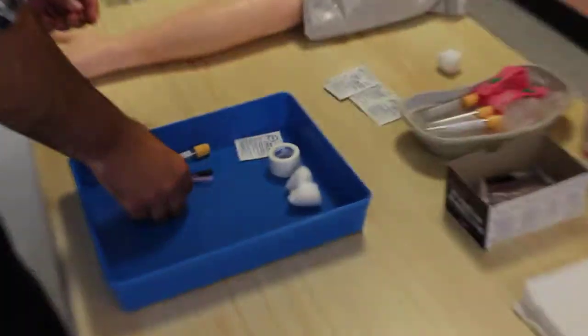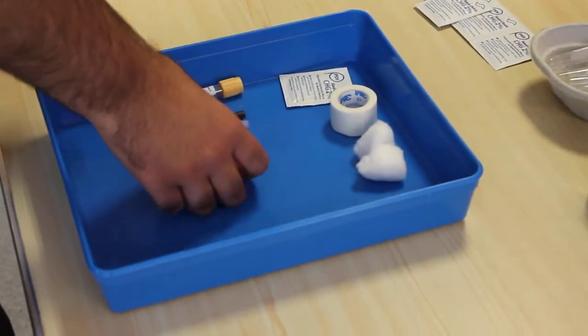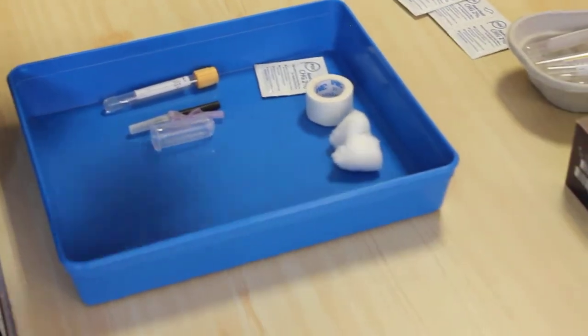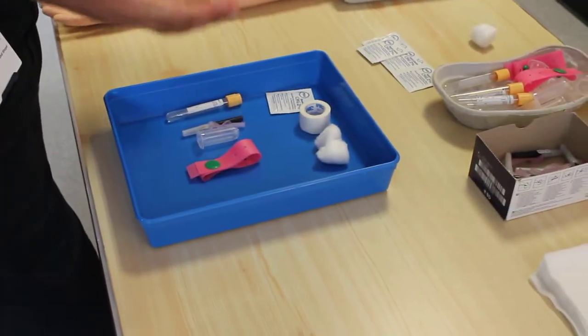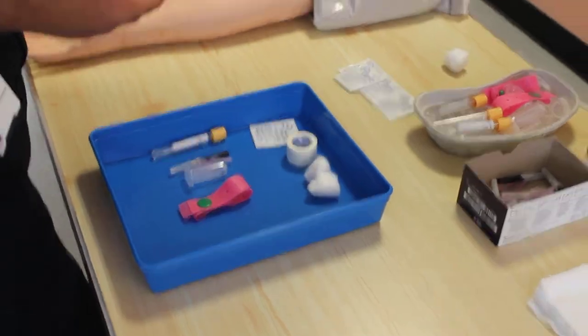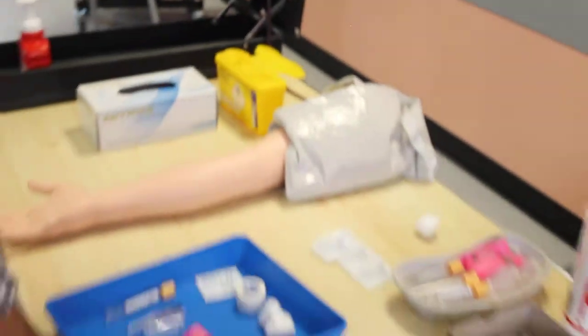The needle, the vacutainer, and the tourniquet. That's a complete set of things you need. You also need a sharps bin and a clinical waste bin to throw the rest of the stuff.